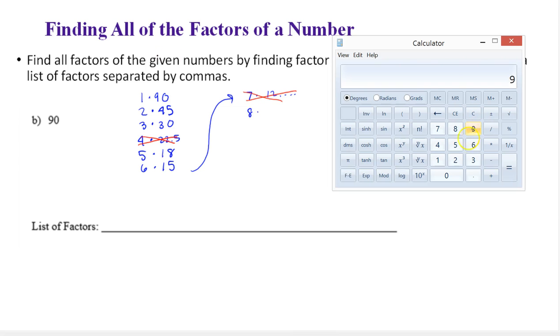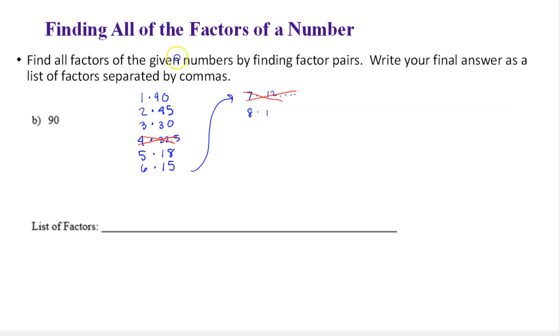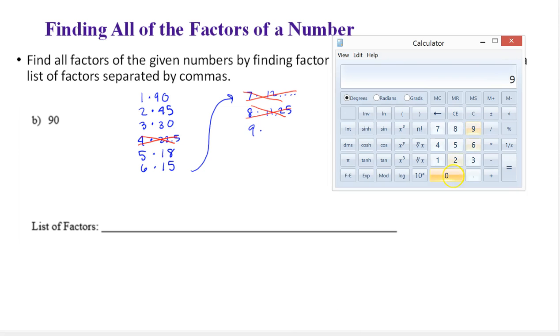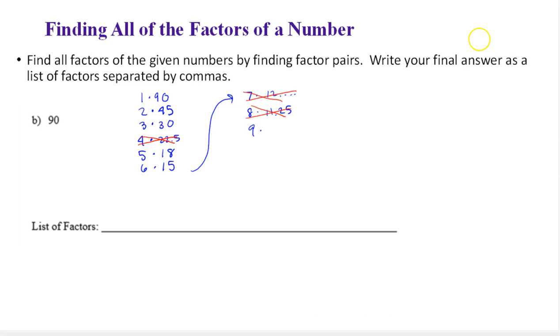Let's try 8. I get 11.25, so that is not working. I'm going to cross this out. Notice these numbers are getting bigger, these numbers are getting smaller, but I have to keep going because 11 is bigger than 8. So let's try 9. I know this is going to work. This is 9 times 10. So 90 divided by 9 is 10. And I actually know I can stop here even though 10 is bigger than 9. The next number I would check is 10, and that would give me 9, and I already have that included. So I can stop here.